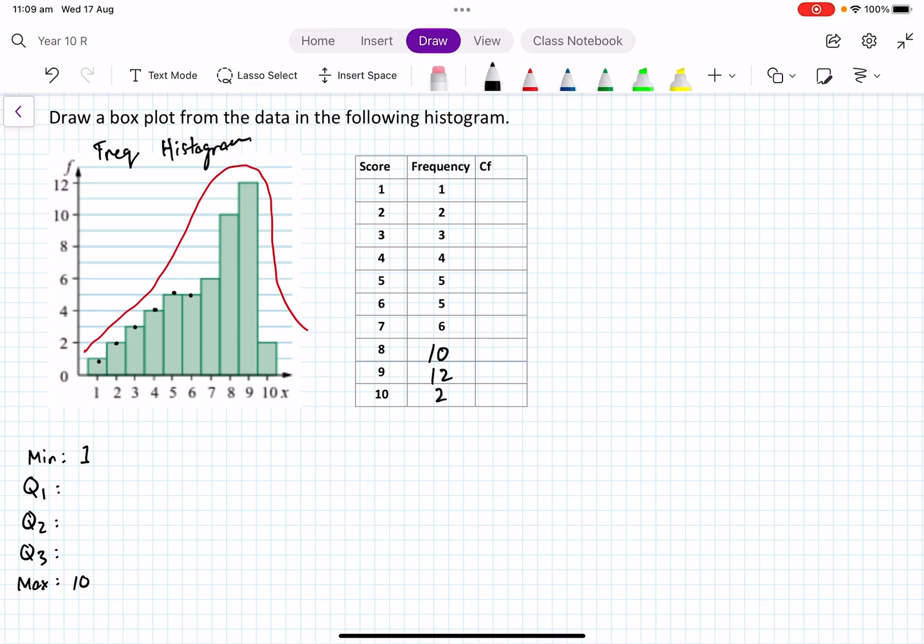Now to do the cumulative frequency. You can see a previous lesson of how I do this in more detail, but the cumulative frequencies just add up. So we've got 10, 15, 20, 26, 36, 48, and 50 scores.